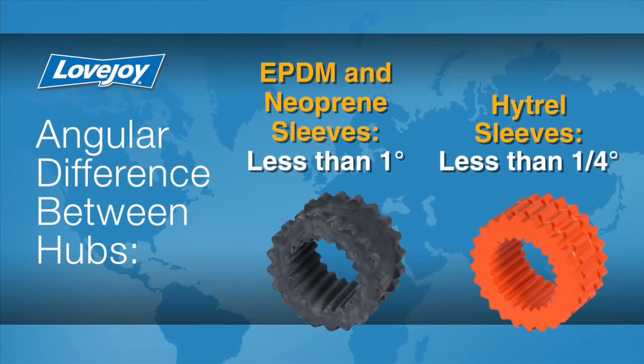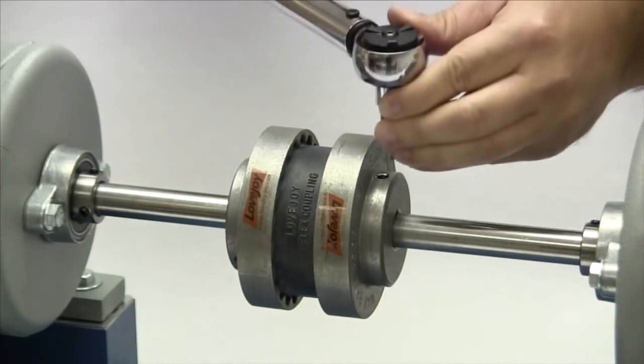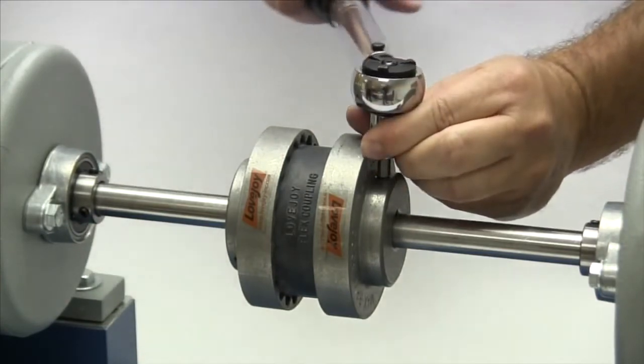If the alignment falls outside these parameters, you may need to move the second hub or realign the equipment to correct this condition. At this time, tighten the set screws in the second flange.